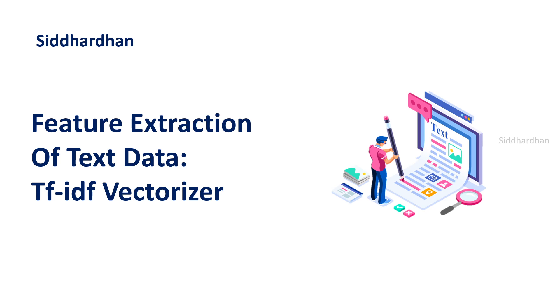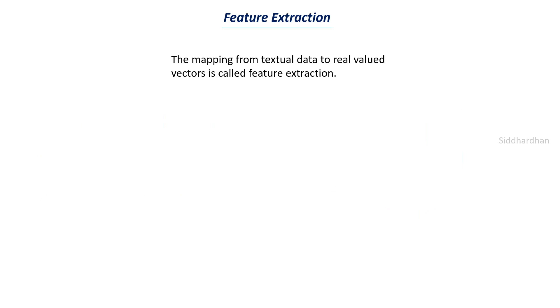First of all, let's try to understand about feature extraction. Feature extraction is all about the mapping from textual data to real-valued vectors — this is called feature extraction. In machine learning, we feed our model with a lot of data, and our model can find patterns in this data and learn from it, as a result of which it can make new predictions. This is how a basic machine learning model works.